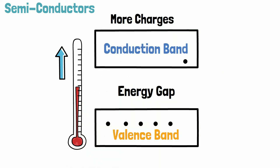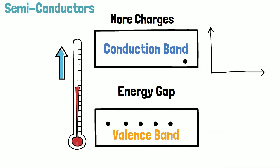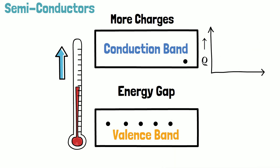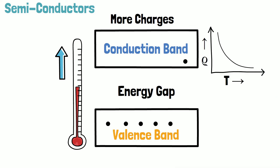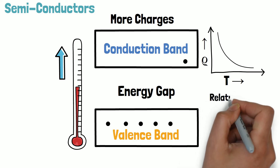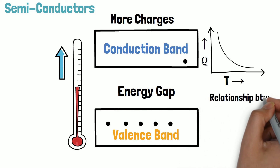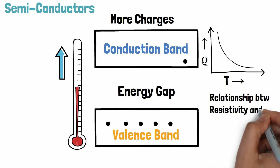The higher concentration of charge carriers decreases the resistivity of the semiconductor. As the resistivity of the semiconductor decreases with an increase in temperature, it becomes more conductive. A semiconductor exhibits excellent conductivity at high temperatures.